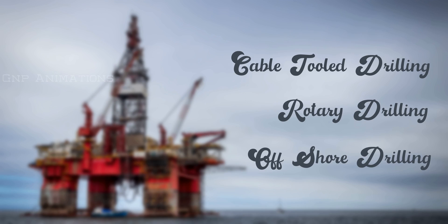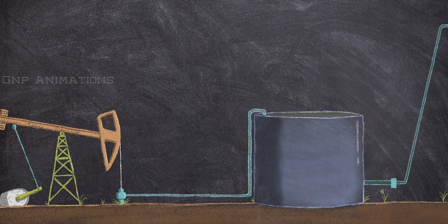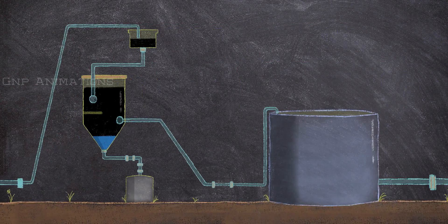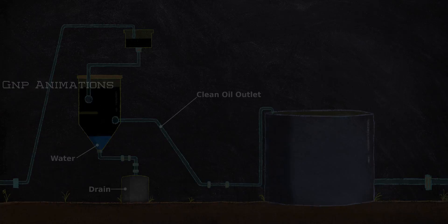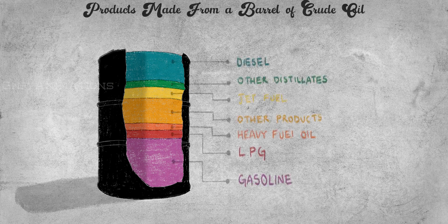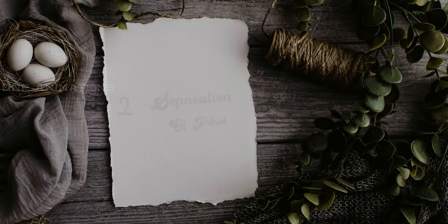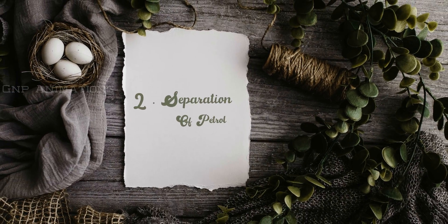After oil is collected, gross contaminants such as gases, water, and dirt are removed. Since crude oil is a combination of many different hydrocarbon materials, it must be separated into its compounds. And that brings us to the second step: separation.